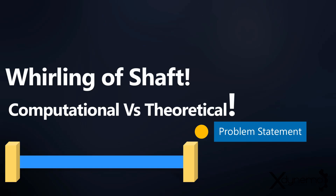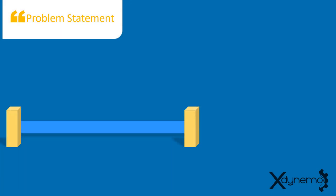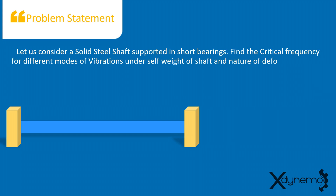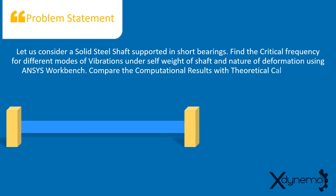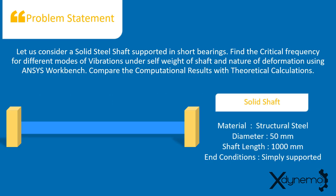Here is the problem statement. Let us consider a solid steel shaft supported in short bearings. Find the critical frequency for different modes of vibrations under self-weight of shaft and nature of deformation using ANSYS workbench, and compare the computational results with theoretical calculations. Consider a solid shaft made up of structural steel with a circular cross section of 50 mm diameter. The length of the shaft is 1000 mm. As the shaft is supported in short bearings, the end conditions can be assumed as simply supported.